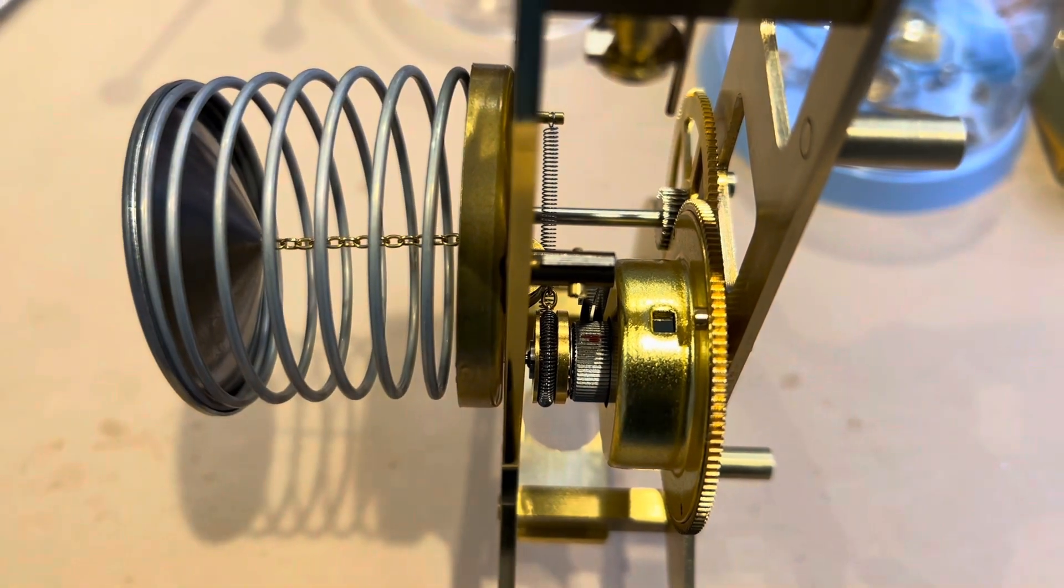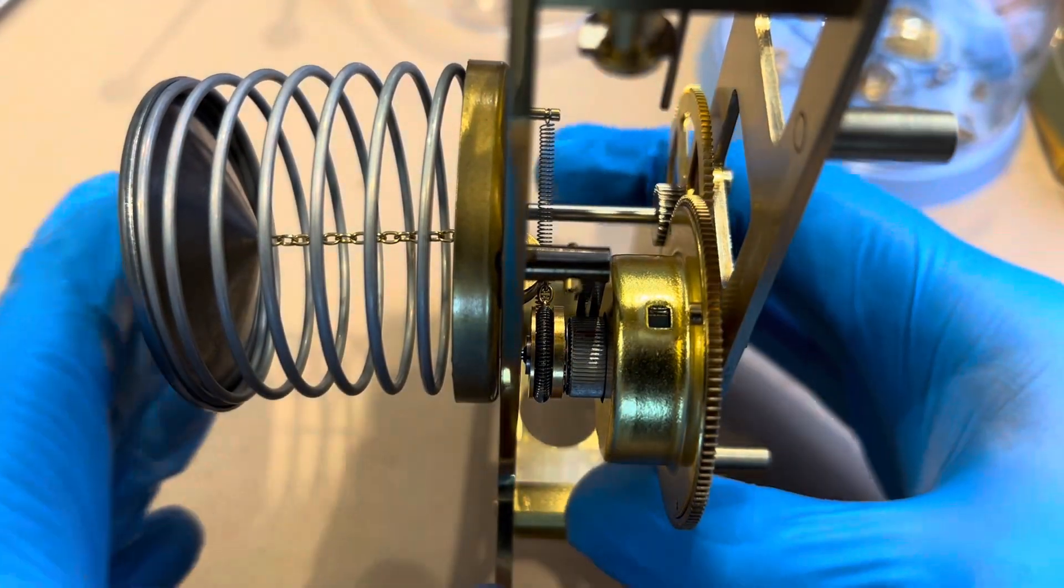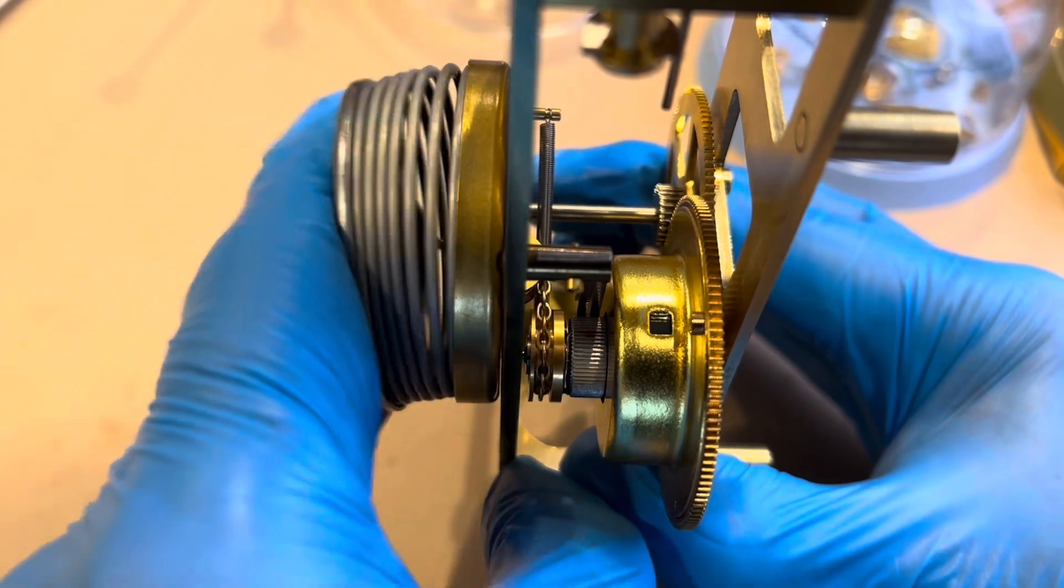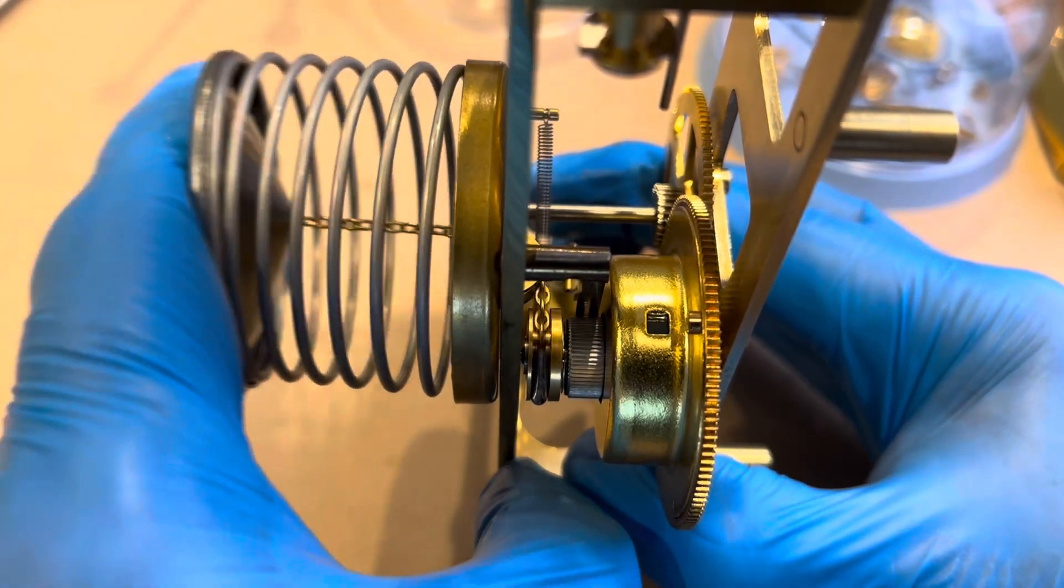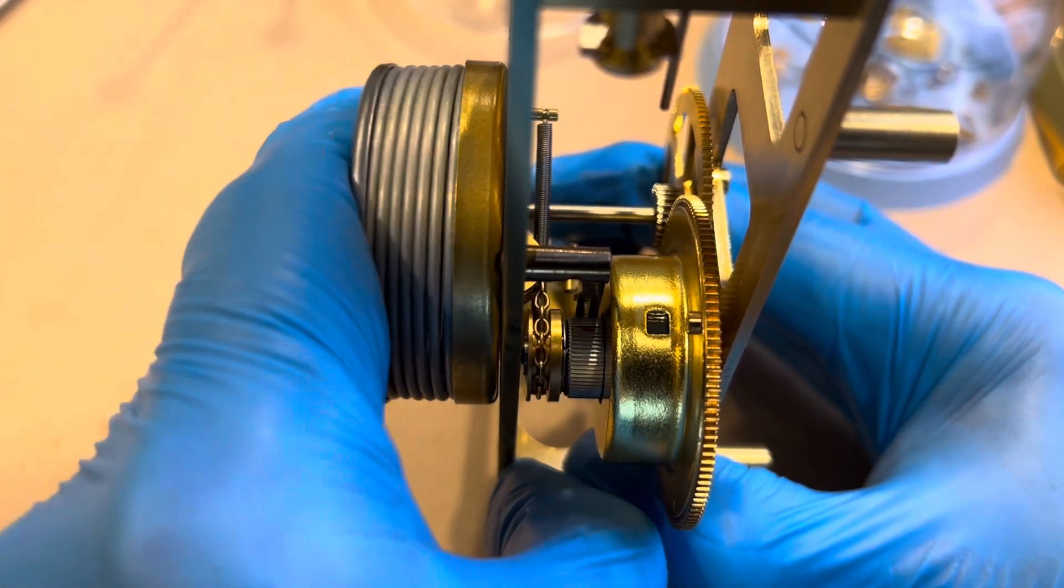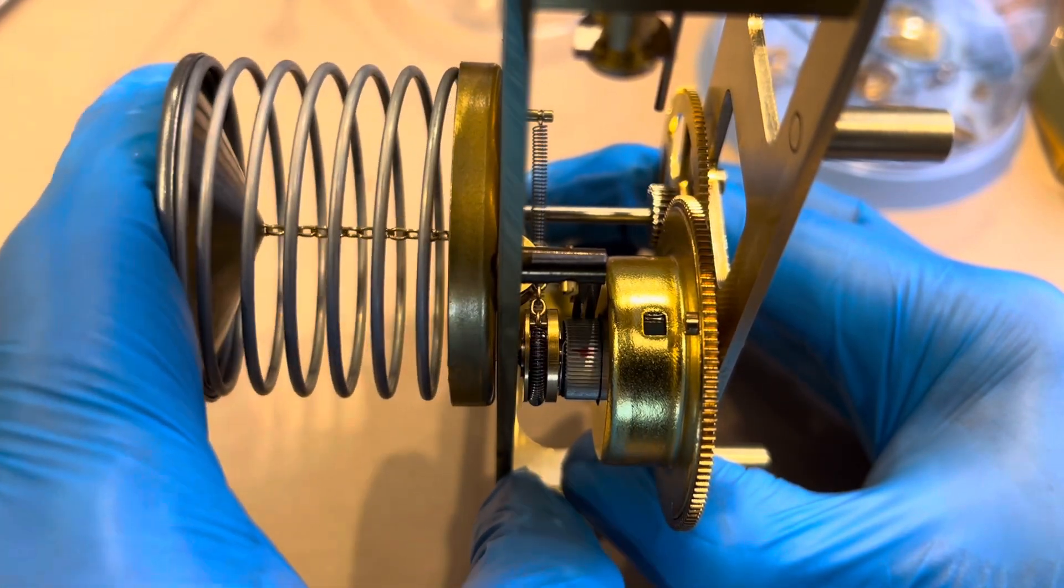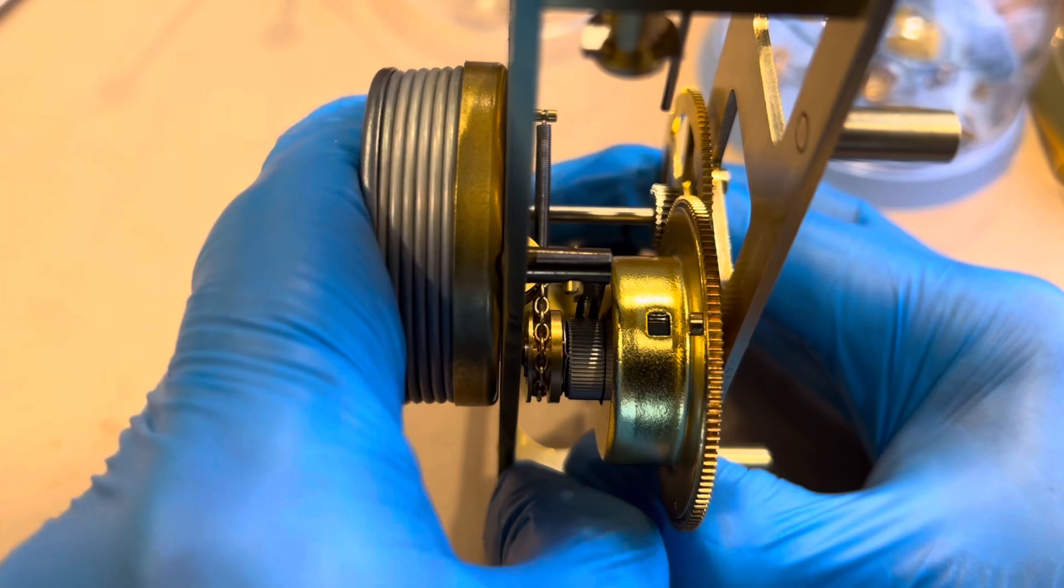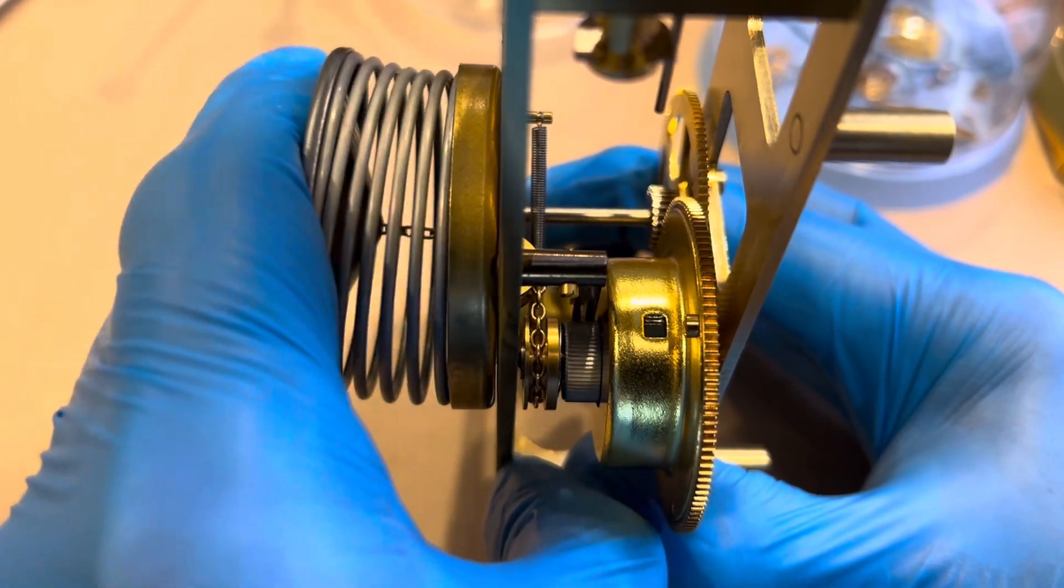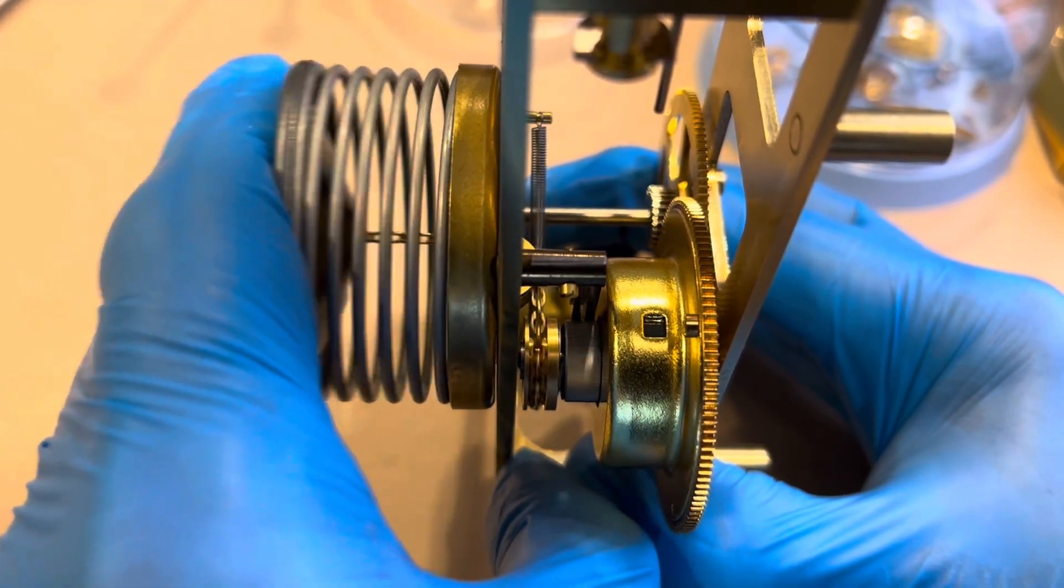It is going to take 11 pumps of the coil spring to get the coil spring strength and the mainspring within equilibrium. But watch the rotation. Watch the red dot. We get 6.5 rotations out of the barrel arbor which means we've got more built-in energy in the main barrel.